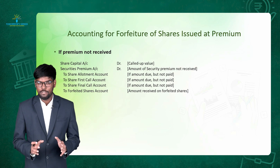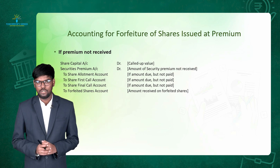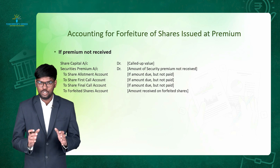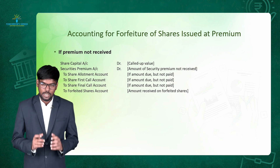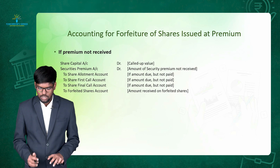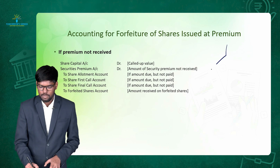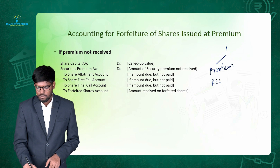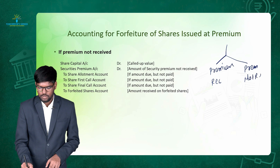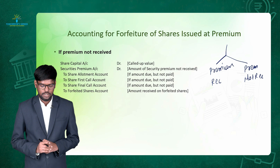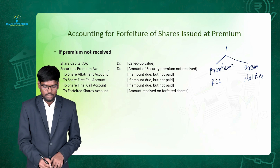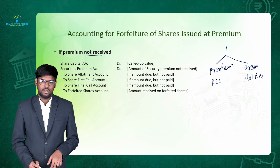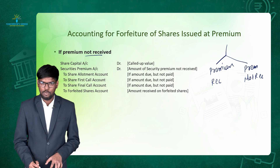Now we have to see the accounting for forfeiture of shares issued at a premium. When a company issues shares at a premium and later forfeits those shares, there are two cases: either the company has already received the premium amount before forfeiture, or the premium amount has not been received. Accordingly, we have to pass different journal entries. First, let us see the entry when premium is not received.